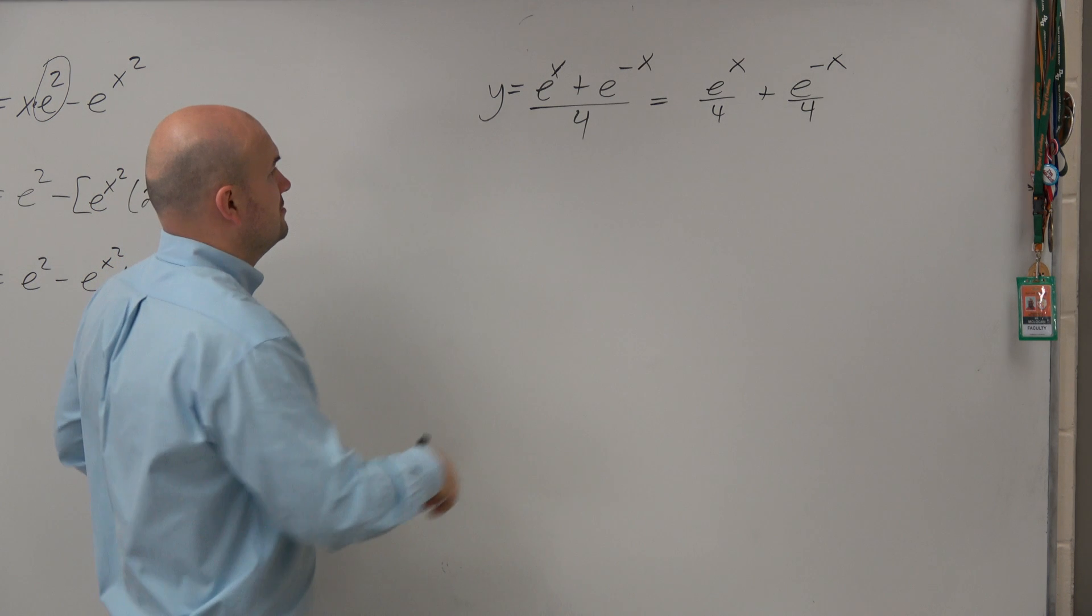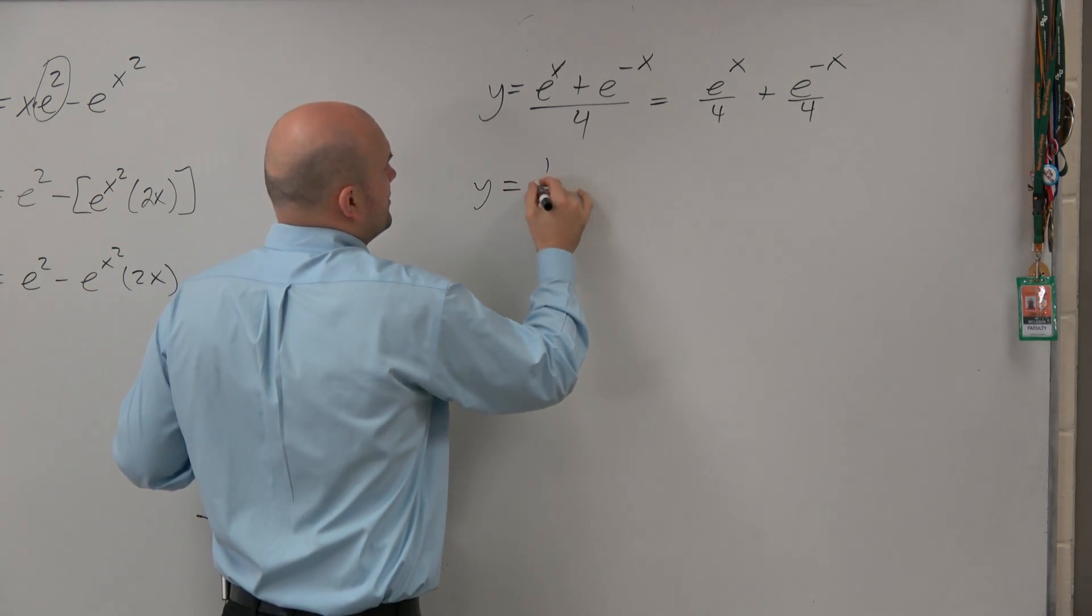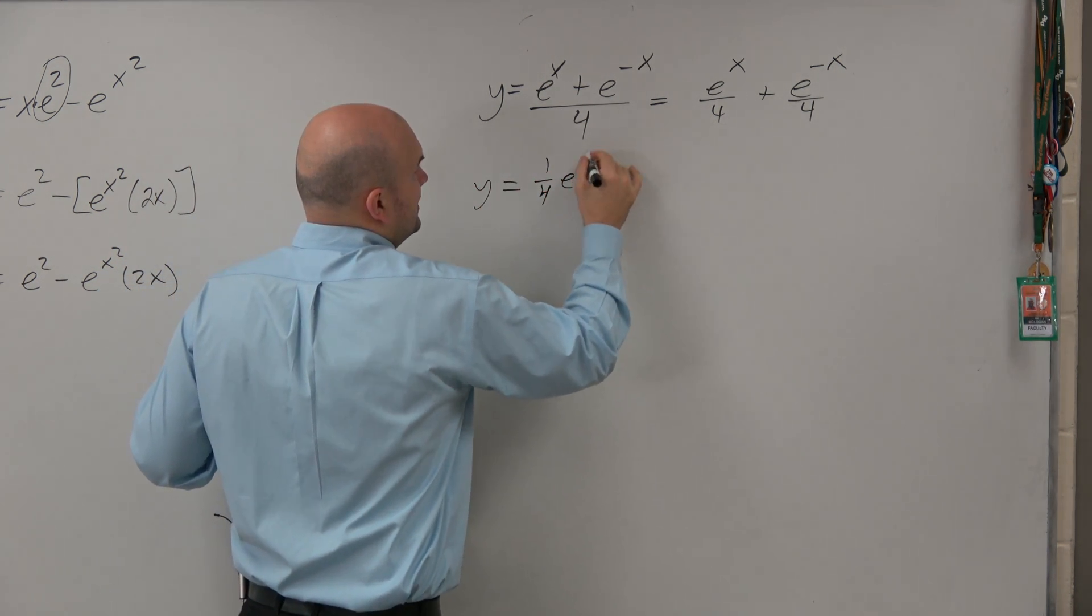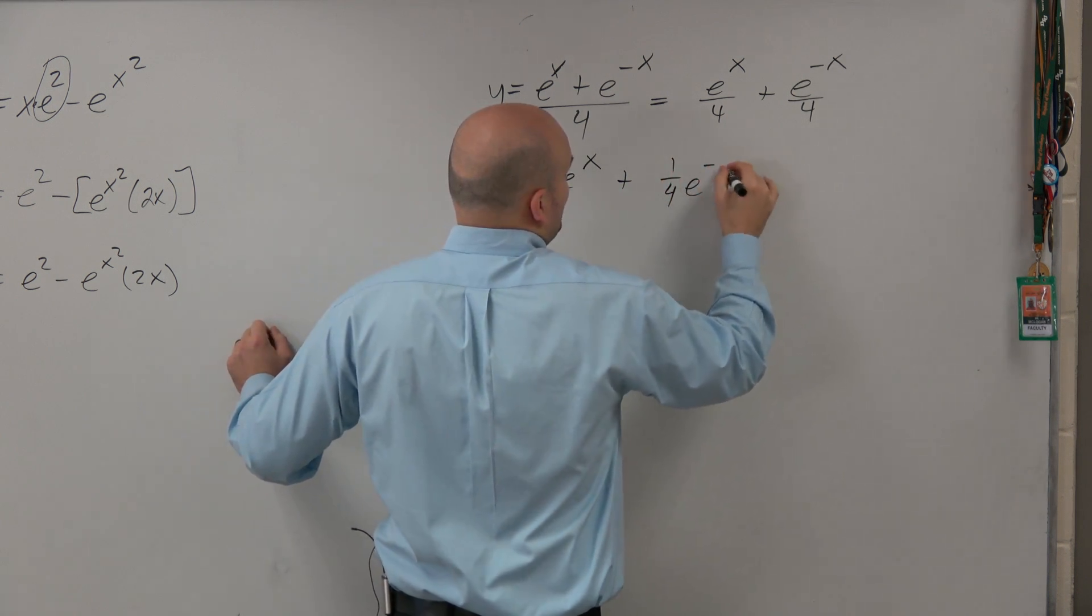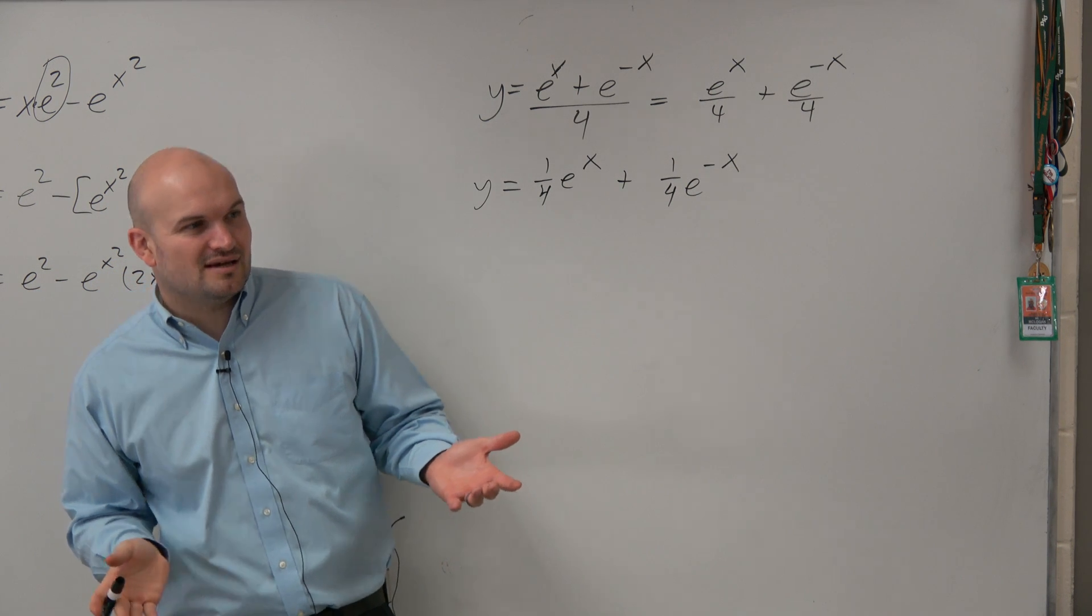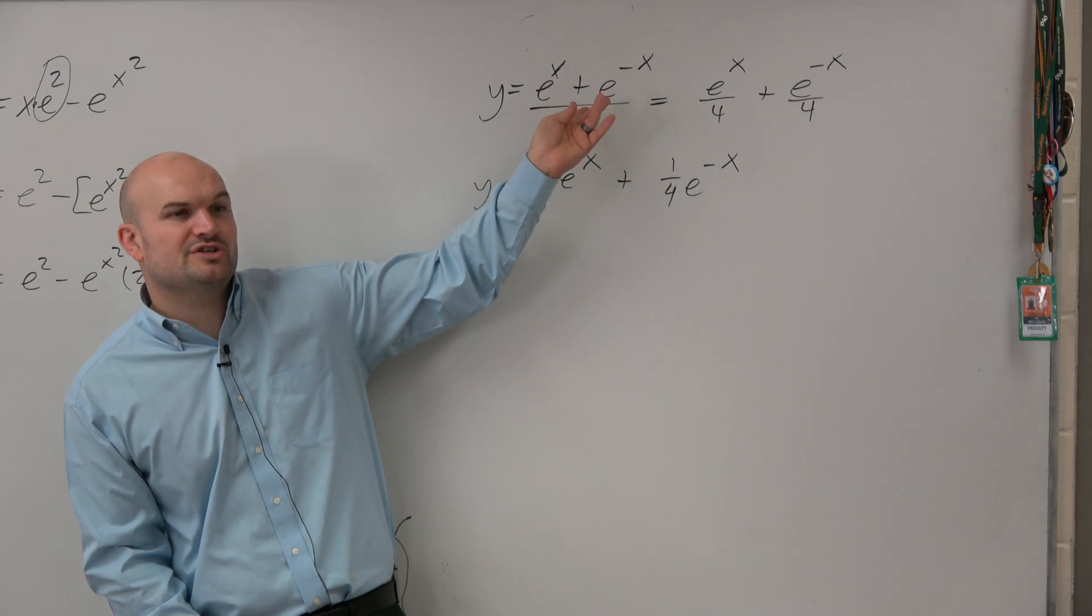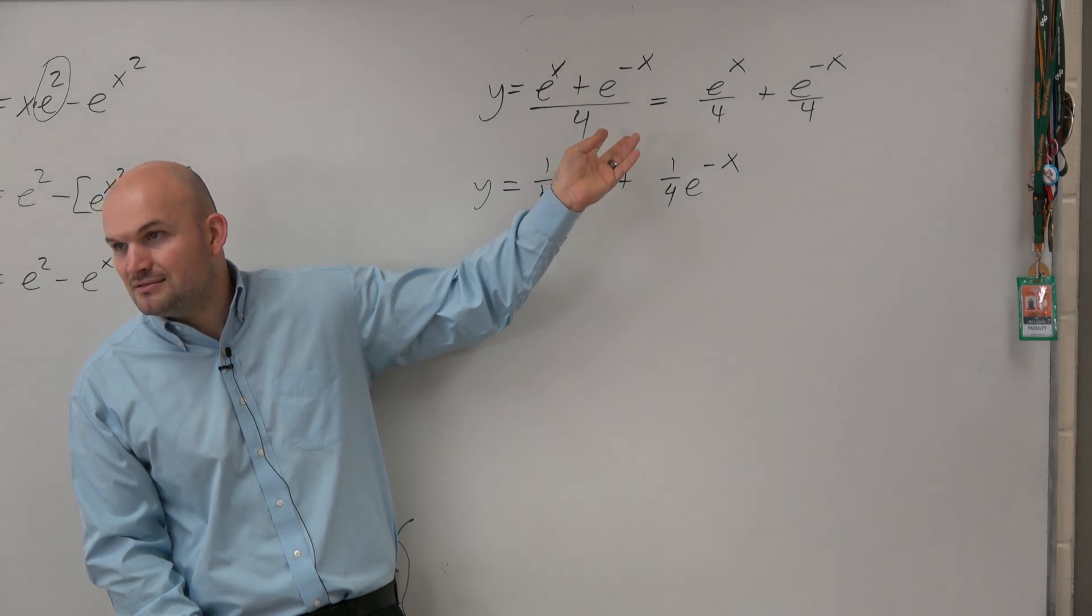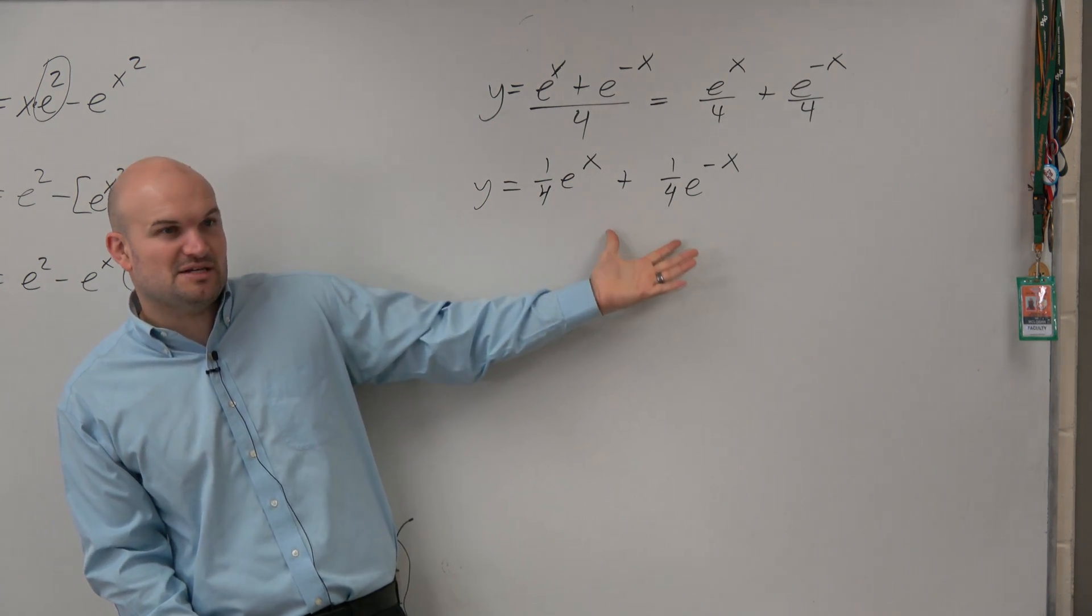Which is really the same thing as 1 fourth e to the x plus 1 fourth e to the negative x. I do that because I don't want to use the quotient rule. I just want it to look like this. It's much easier to look like this.